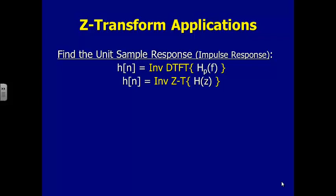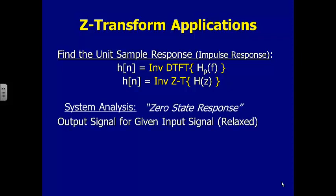Z-transforms have all the same applications we can do with Fourier transforms. If you want to find the unit sample response of a system, instead of solving a difference equation with special initial conditions, it's probably easier to transform the difference equation using the Z-transform, rearrange it to H of Z, and take the inverse transform. We can't do that right now because we need an inverse transform, and we haven't covered that yet — that's Wednesday.